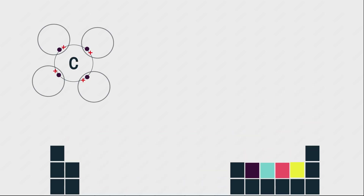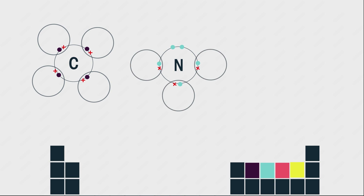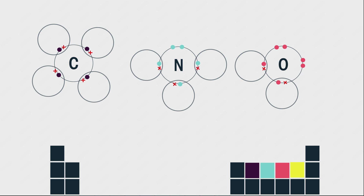Carbon has four out of eight electrons in its outer shell, so makes four covalent bonds. Nitrogen has five out of eight electrons in its outer shell, so can make three covalent bonds to make the shell full. Oxygen has six electrons in its outer shell and can bond with two hydrogen atoms to share two more electrons, giving it a full outer shell of eight electrons.